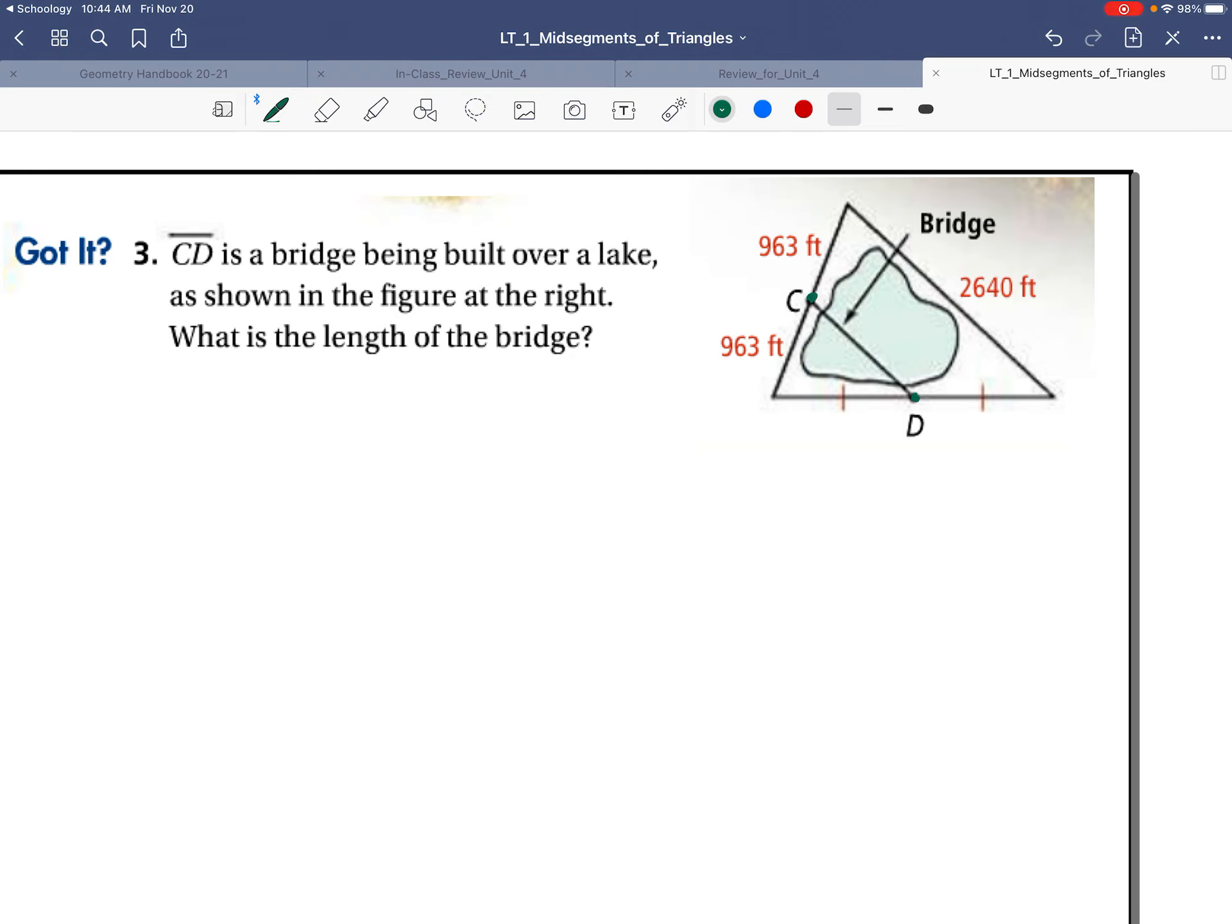What we know is C and D are midpoints of these two sides because it's cutting them in half. These two are congruent. So if CD is a mid-segment to this length, 2,640 feet, we'll take 2,640 and divide it by 2 to get what the mid-segment length is. So it's 1,320 feet. That's how long the bridge is.